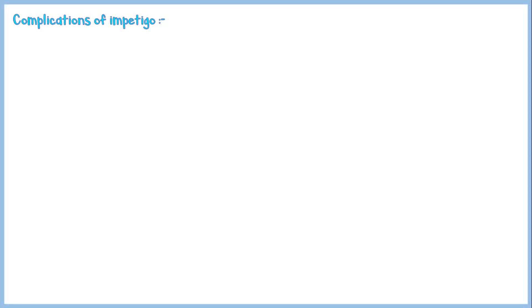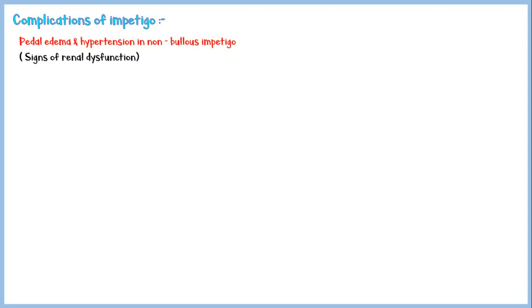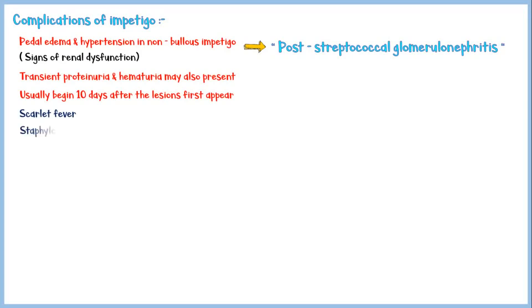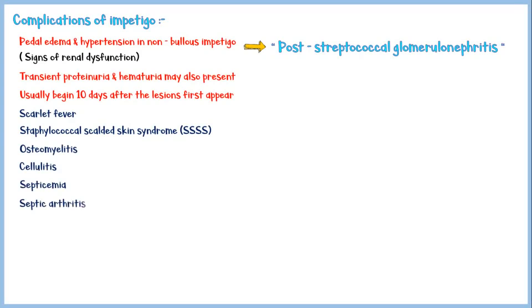Some patients may experience pedal edema and hypertension in non-bullous impetigo — these are signs of renal dysfunction caused by post-streptococcal glomerulonephritis. Transient proteinuria and hematuria may also be present, and these signs usually begin about 10 days after the lesions first appear. Additional complications include scarlet fever, staphylococcal scalded skin syndrome, osteomyelitis, cellulitis, septicemia, and septic arthritis.